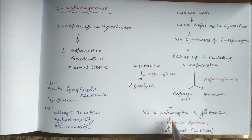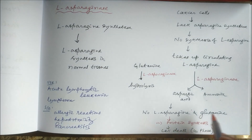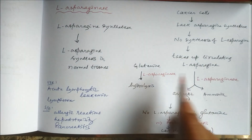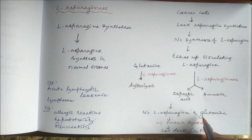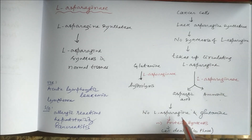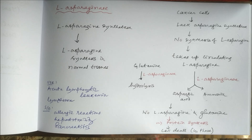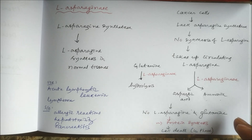So there will be no L-Asparagine and Glutamine — these two amino acids will be absent in cancer cells. Therefore protein synthesis is also inhibited, and because of this inhibition in protein synthesis there will be cell death in the G1 phase.